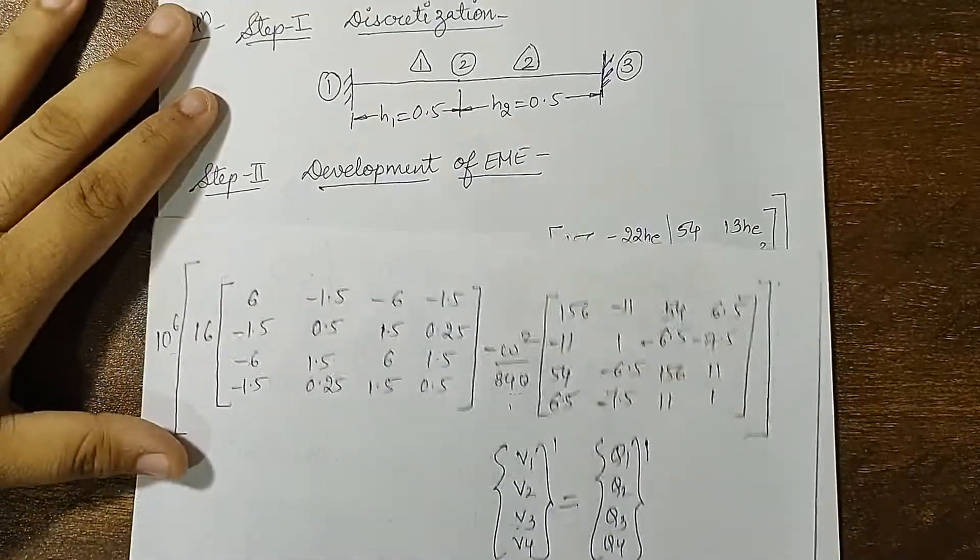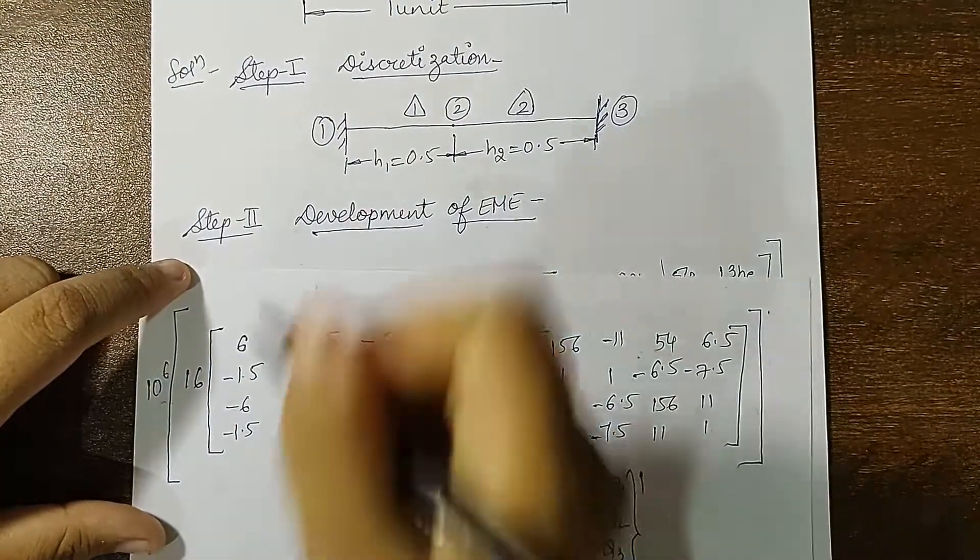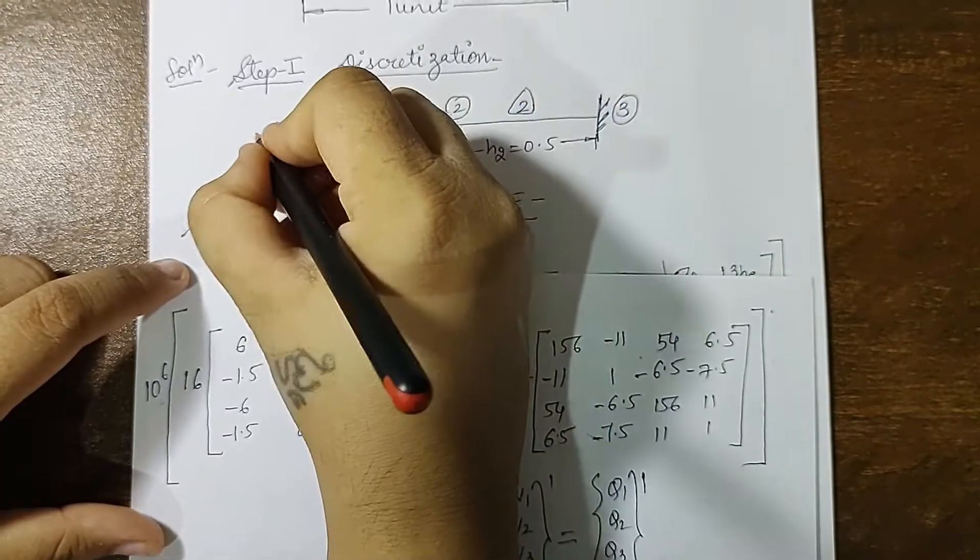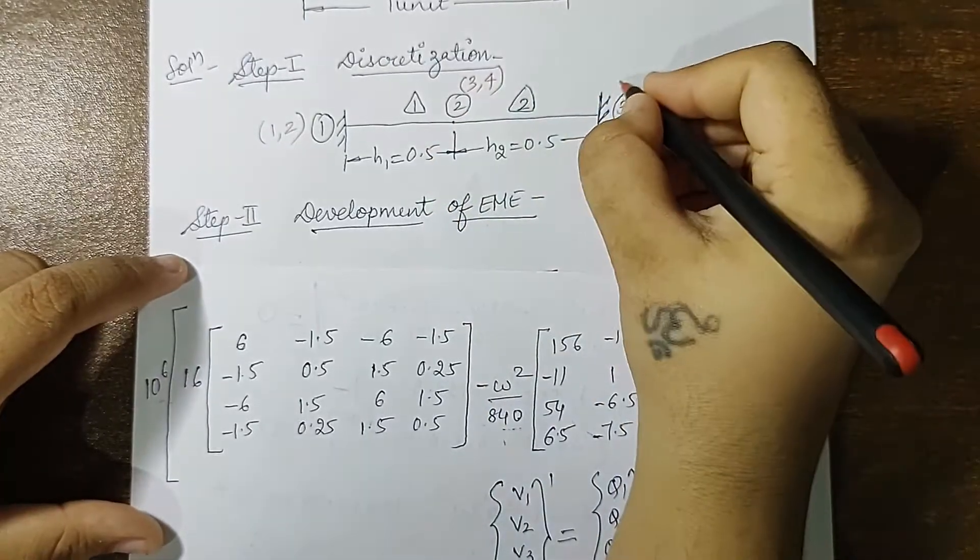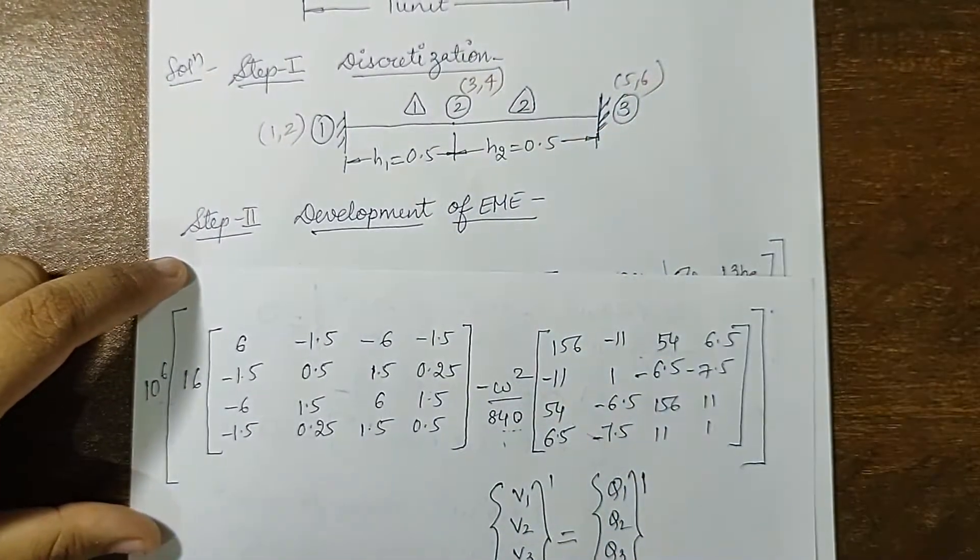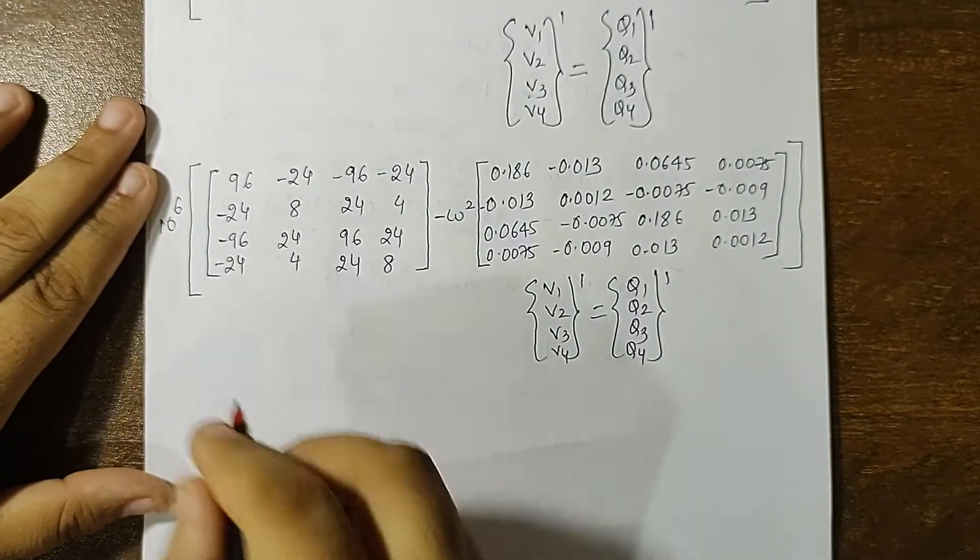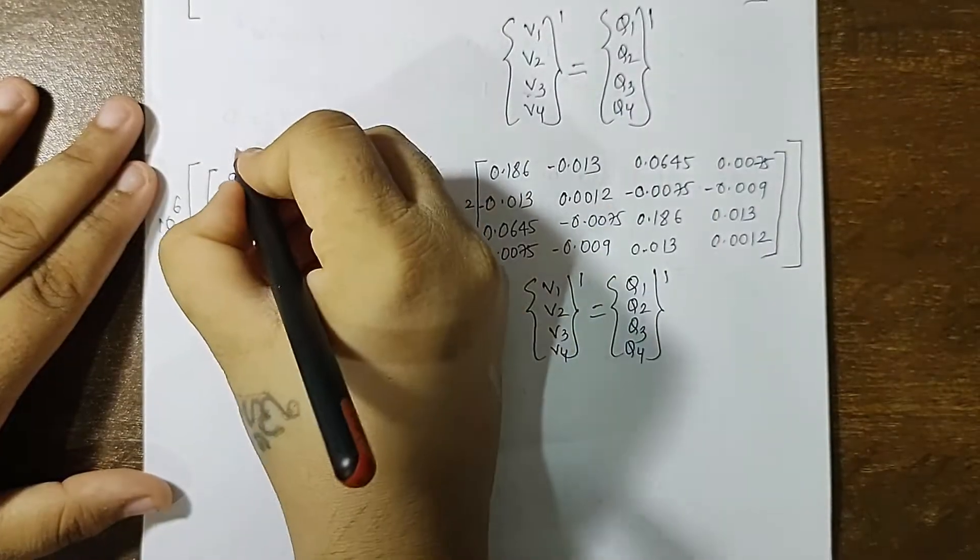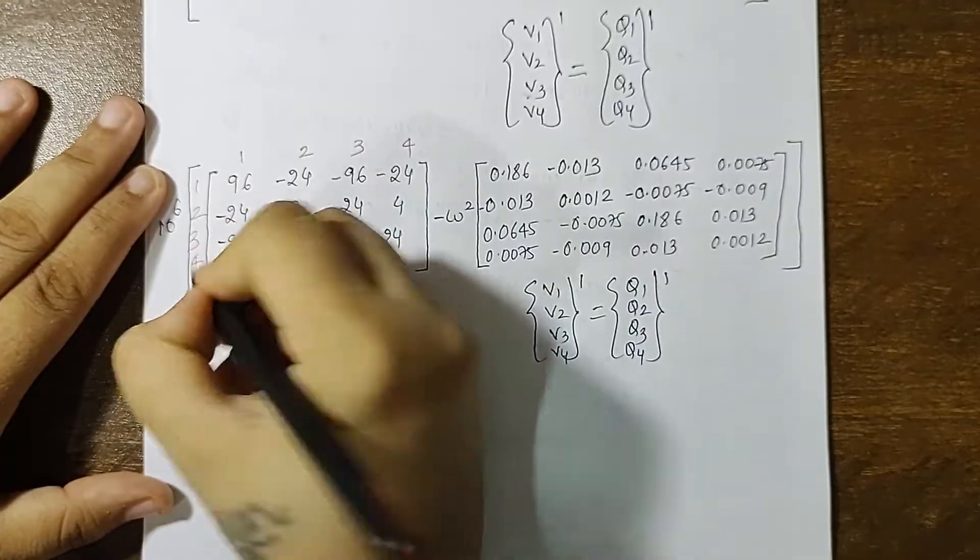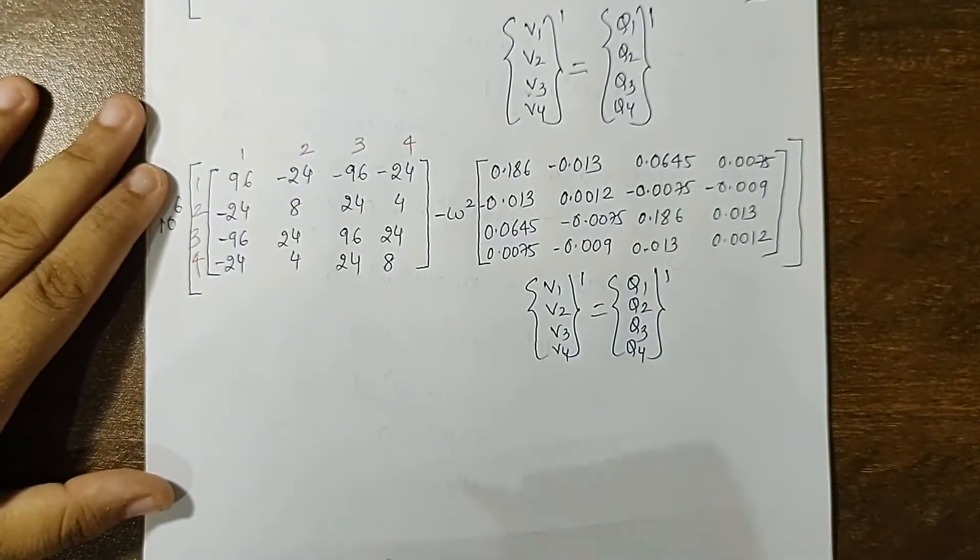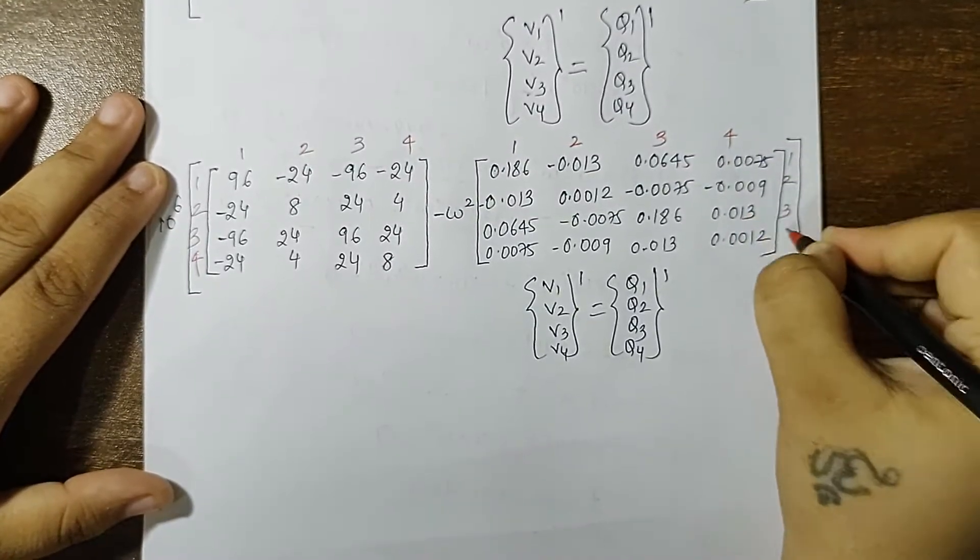As we have already drawn in the discretization diagram, element 1 is between node 1, 2. Now this 1, 2 are the nodes, but here we have to mention the degree of freedom. That is 1, 2, I will have 3, 4 and this is 5, 6. So in transverse vibration, it is not a very simple matrix. Here I am going to have a 4 by 4 matrix each. So here I will have 1, 2, 3, 4, 1, 2, 3, 4. These are indicating the degree of freedom of the body.